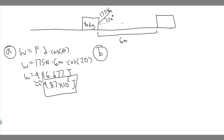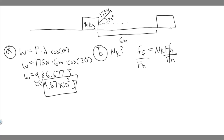For part (b), we need to find the coefficient of kinetic friction, mu sub k. The formula is: force of friction equals mu sub k times F sub n (the normal force). To solve for mu sub k, we divide both sides by F sub n, so we need to find both the frictional force and the normal force.